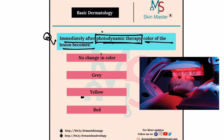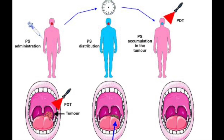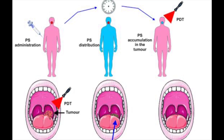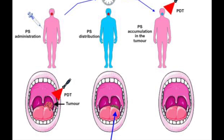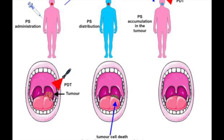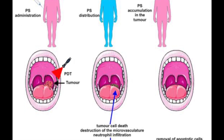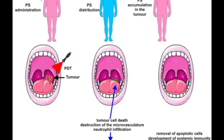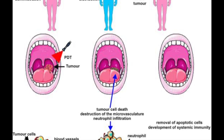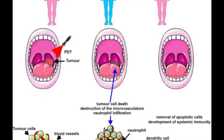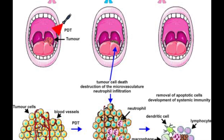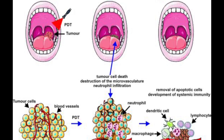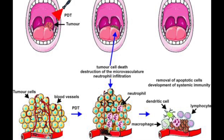In photodynamic therapy there are two stages of treatment: we give a photosensitizer and then we expose the skin to light. In this image you can see that the patient's skin is exposed to light — a specific wavelength is given — and before that a photosensitizer is applied.